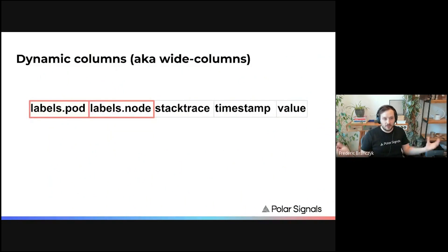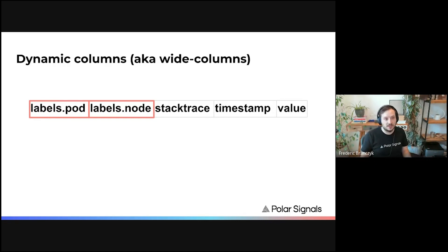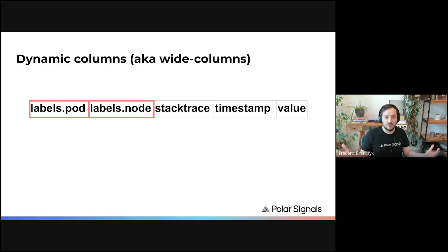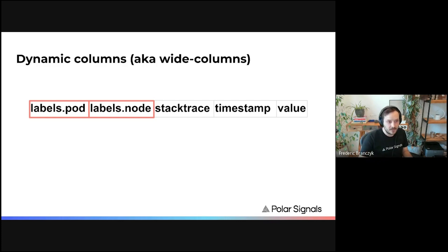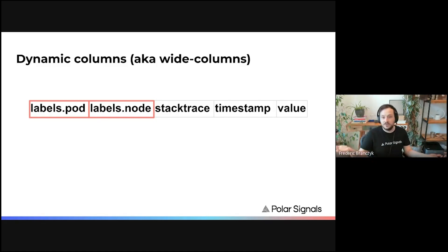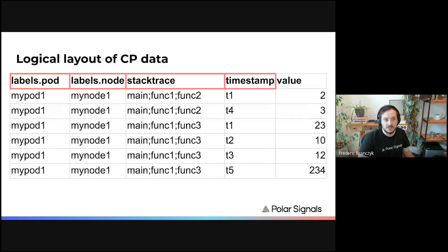We went back and figured out what all the properties we wanted were, and what makes this special. It's something some other databases call wide columns — partially there's a static schema in the database: that's our stack trace, our timestamp, our value column. But the label columns dynamically get created as we see a label key for the first time. We call this feature dynamic columns — they essentially dynamically expand as we see new keys. Now we can actually lay this data out logically and optimize it the way we want.